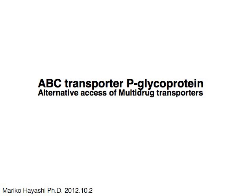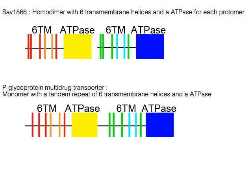ABC transporter P-glycoprotein and alternative access of multi-drug transporters. Two transporter structures are discussed here. SAV-1866 forms a homodimer with six transmembrane helices and ATPase for each protomer. P-glycoprotein multi-drug transporter is a monomer with a tandem repeat of six transmembrane helices and ATPase.